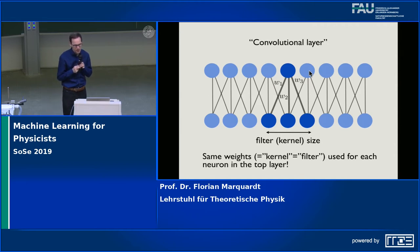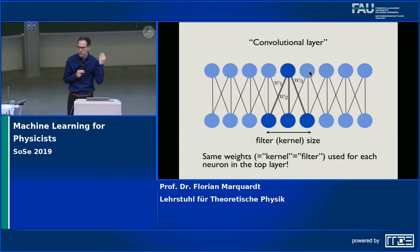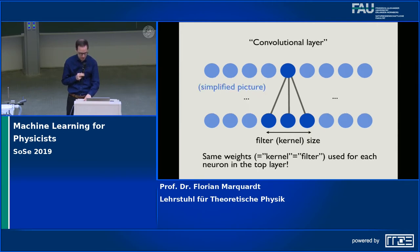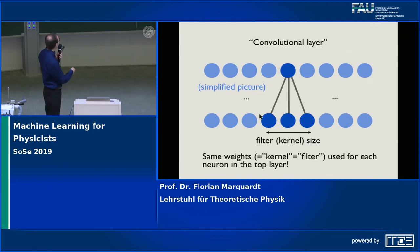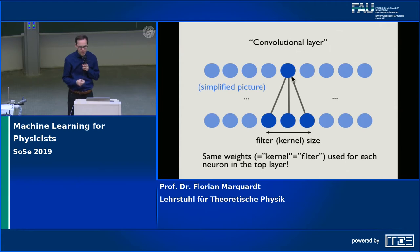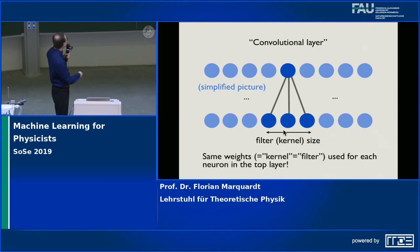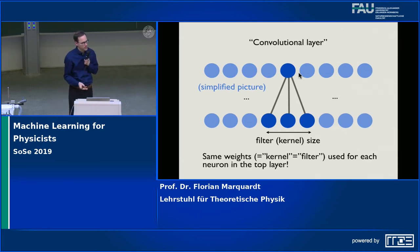This is an immense reduction in memory, because you only need to store these three weight values instead of many more. If I simplify the picture, I indicate connections for only one neuron in the upper layer and note the rest works the same way. Apart from that, you can still do the neural network exactly as before: once you do this linear operation involving the filter, you can still apply a non-linear activation function. It's only the structure of the connections that has been simplified.